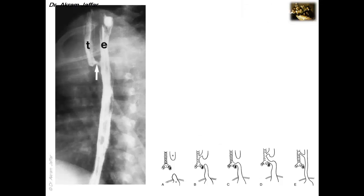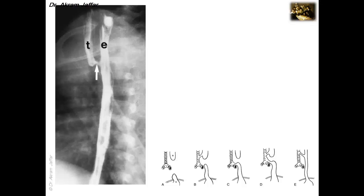This is a rare variety in which there is fistula but no atresia of the esophagus. A radio-opaque dye swallowed by the newborn shows the esophagus, with part of the dye passing to the trachea because of the presence of the fistula. In this oblique view, both the trachea anteriorly and the esophagus posteriorly can be visualized.